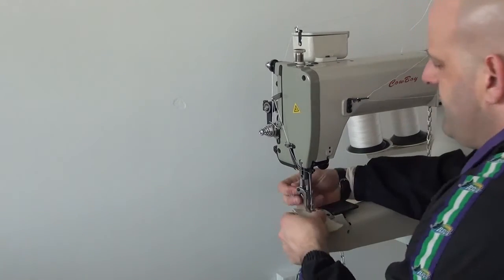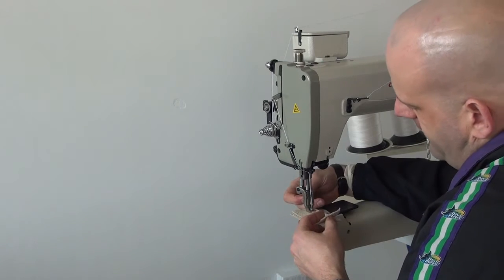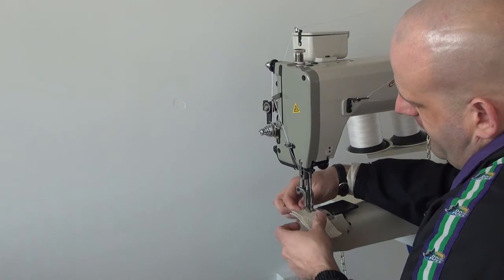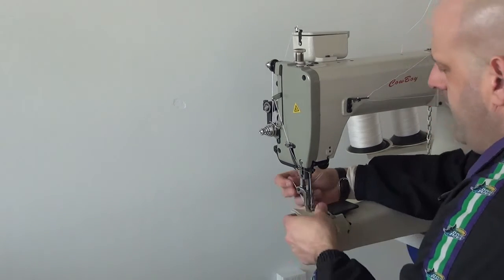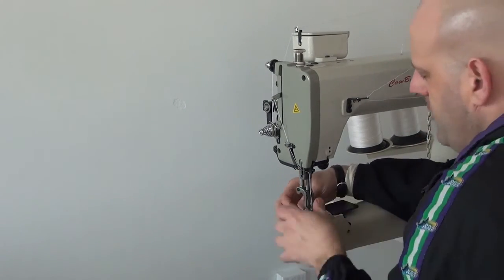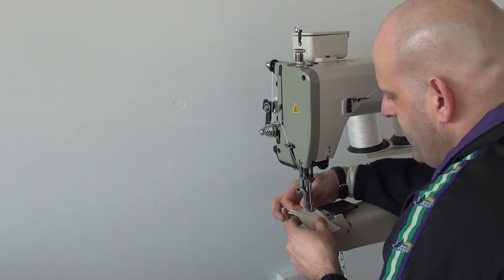And so now we're going to go to something that's very light. This is two layers of approximately four ounce sofa leather or upholstery grade leather. So I'm going to sew this so you can get an idea about how the machine will perform on lightweight materials.